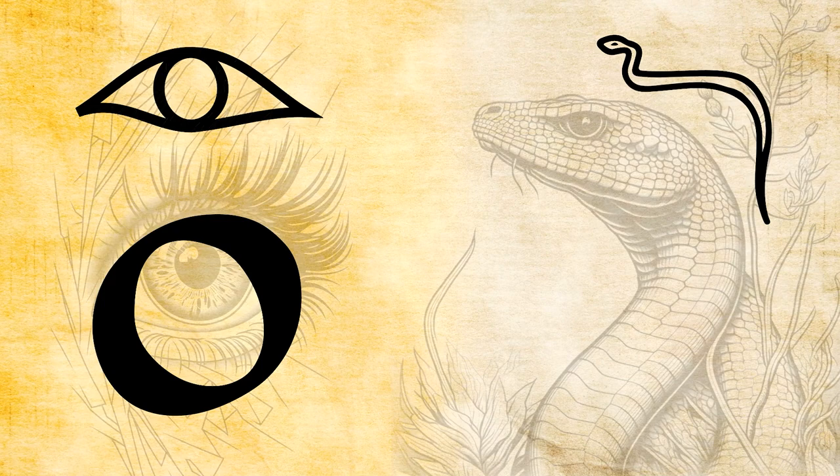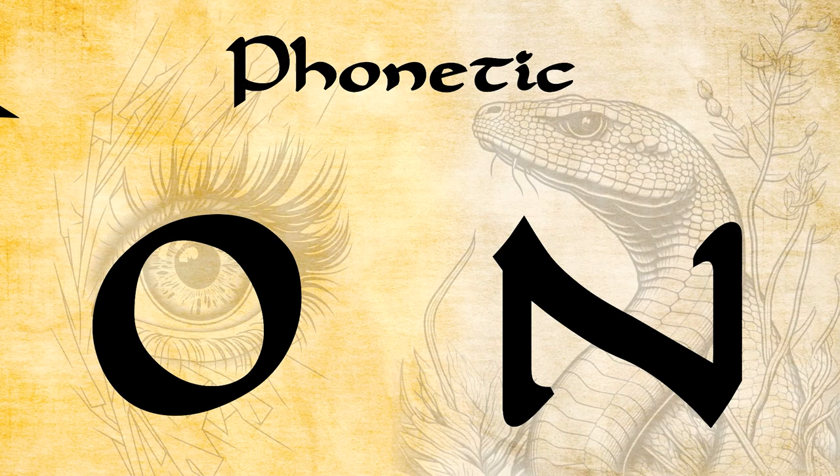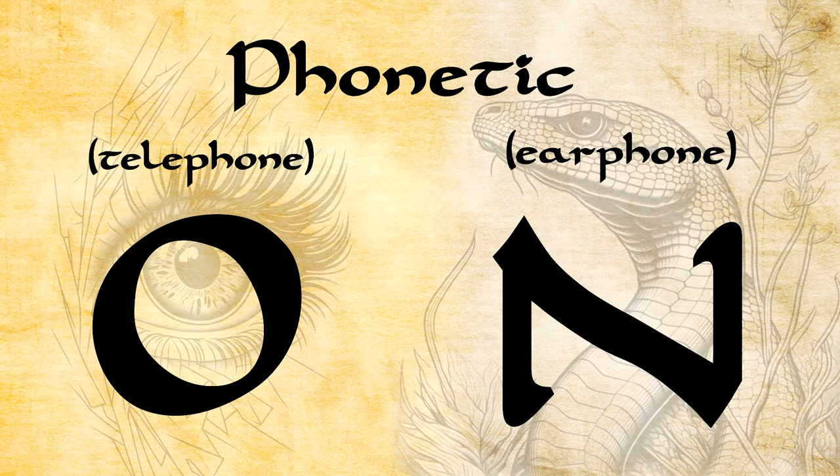And that's why you can say our alphabet is phonetic. The "phone" part of phonetic is the same as in telephone or earphone — it means sound. And that's because our letters are sounds. The images don't matter.